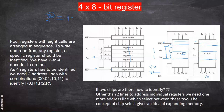So this is one method, and the output is similar. You have to lower the read signal and give the location in A naught and A one. Accordingly, the respective registers will be selected and the data will be read. We have a 2-to-4 decoder to do that — as four registers have to be identified, we need two address lines. If two chips are there, how to identify which chip? Other than two lines to address individual registers, we need one more address line which selects between these two. That is the concept of chip select and expanding memory.